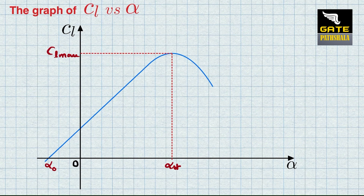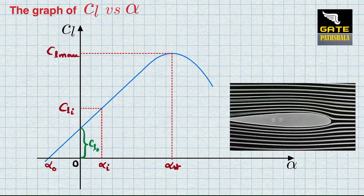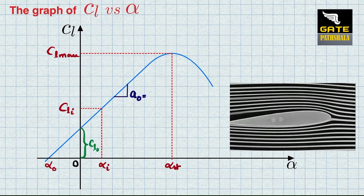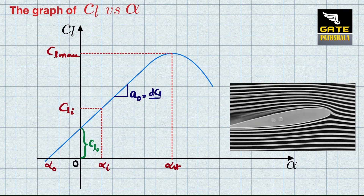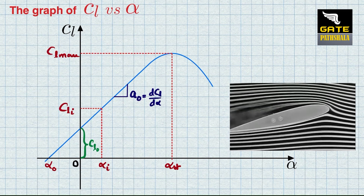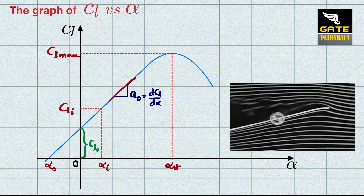Then we have the zero lift angle of attack. The ideal lift coefficient at the ideal angle of attack corresponds to the cruising angle of attack. CL0 is the lift coefficient at zero angle of attack. The lift curve slope of the airfoil is denoted by A0 or dCL/d_alpha, and it is positive in the linear region.